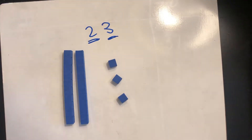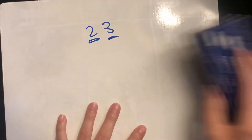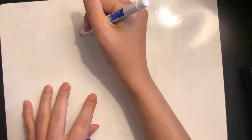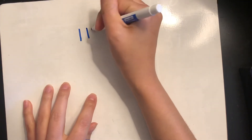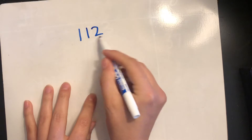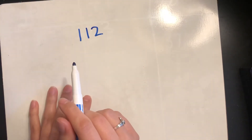So today what I want to go over is how to build three-digit numbers. Three-digit numbers are numbers that have three digits in them, like the number 112. See how there are three digits in this number? That's what we call a three-digit number.